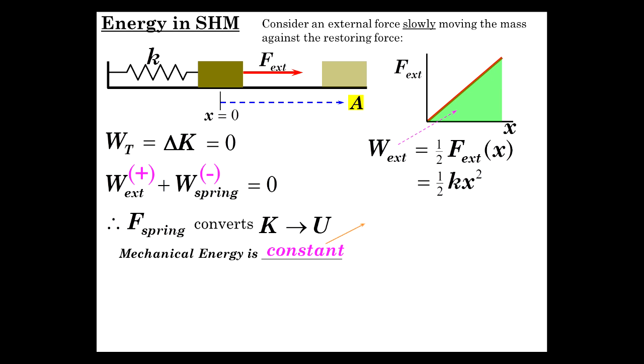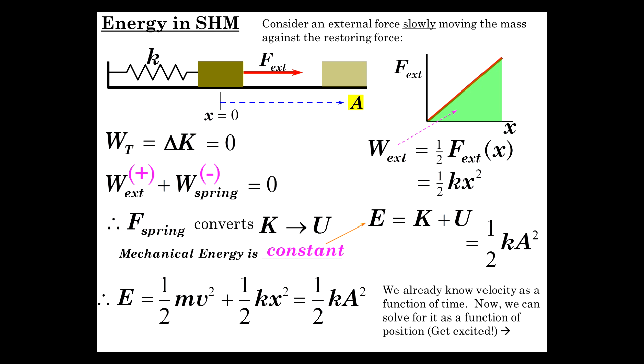Mechanical energy is conserved, and so we can write mechanical energy is K plus U, one-half k A squared. One-half k A squared is the entire amount of mechanical energy. When the kinetic is zero, A is max. A is the maximum stretch, so it's all in spring potential at that point. So we can write E equals one-half mv squared plus one-half kx squared, which is one-half k A squared, and this will lead us to solve for the velocity as a function of position.